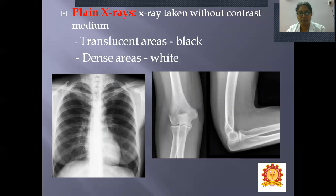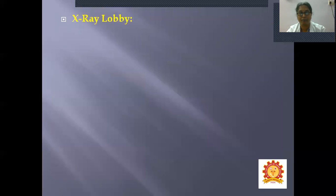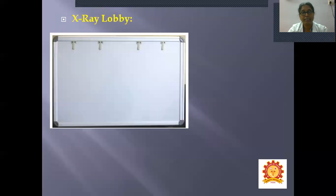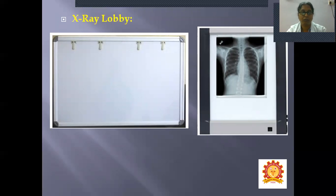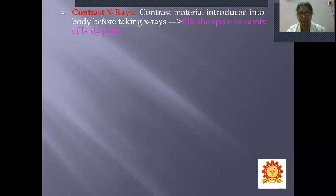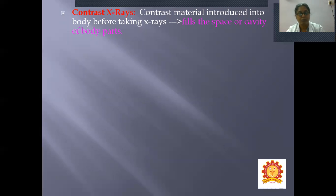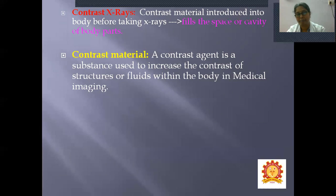The X-ray lobby is where you mount the X-ray film and visualize and read it — you will see this lobby in the dissection hall and in the hospital setup. The second type is contrast X-ray, where contrast material is introduced into the body before taking X-rays. The contrast material fills the space or cavity of body parts to highlight the cavity or space of an organ.